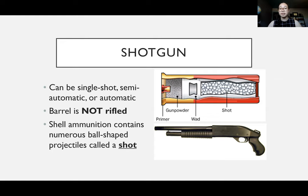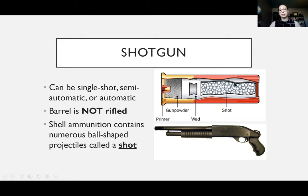Lastly, we have shotguns. These can also be single shot, semi-automatic, or automatic. The important difference is that the barrel is not rifled — it has what we call a smooth bore. The ammunition is also different: the shells contain metal balls called shot. When fired, the shot spreads out, producing a pattern of small dots on a target caused by these metal balls or pellets.